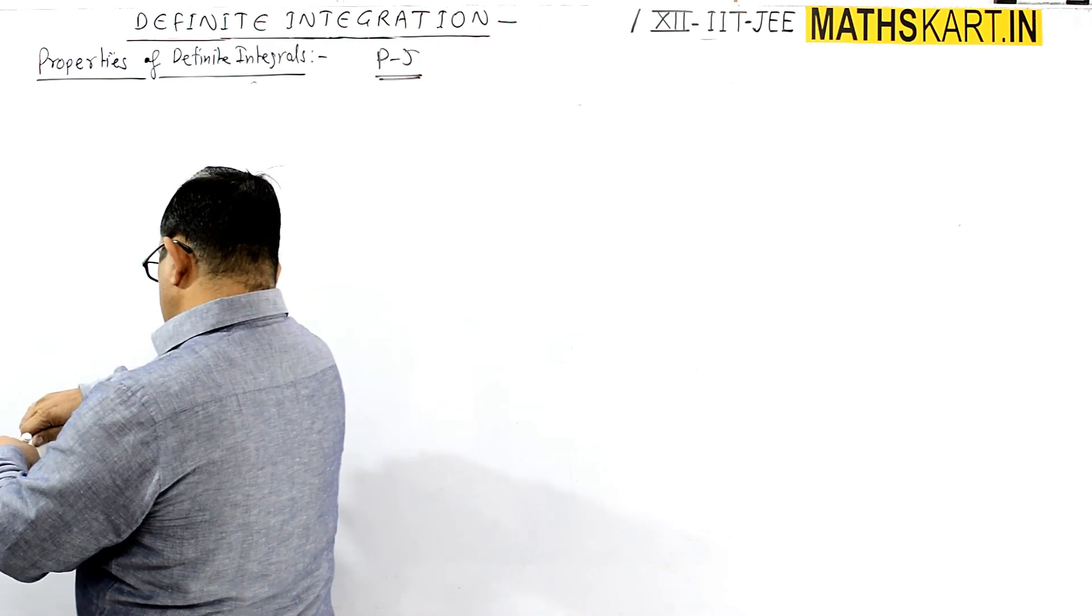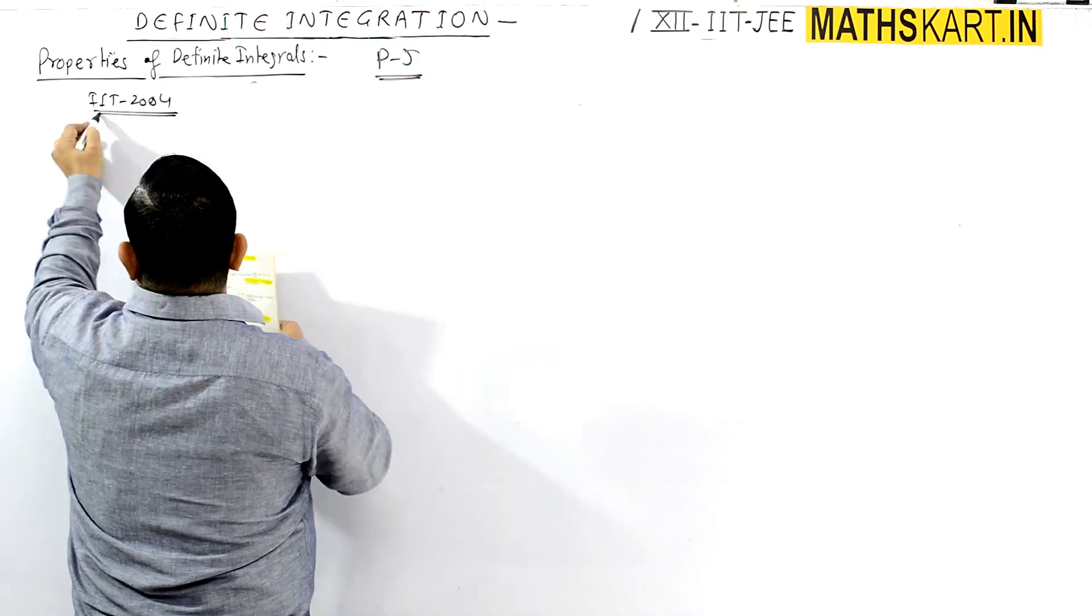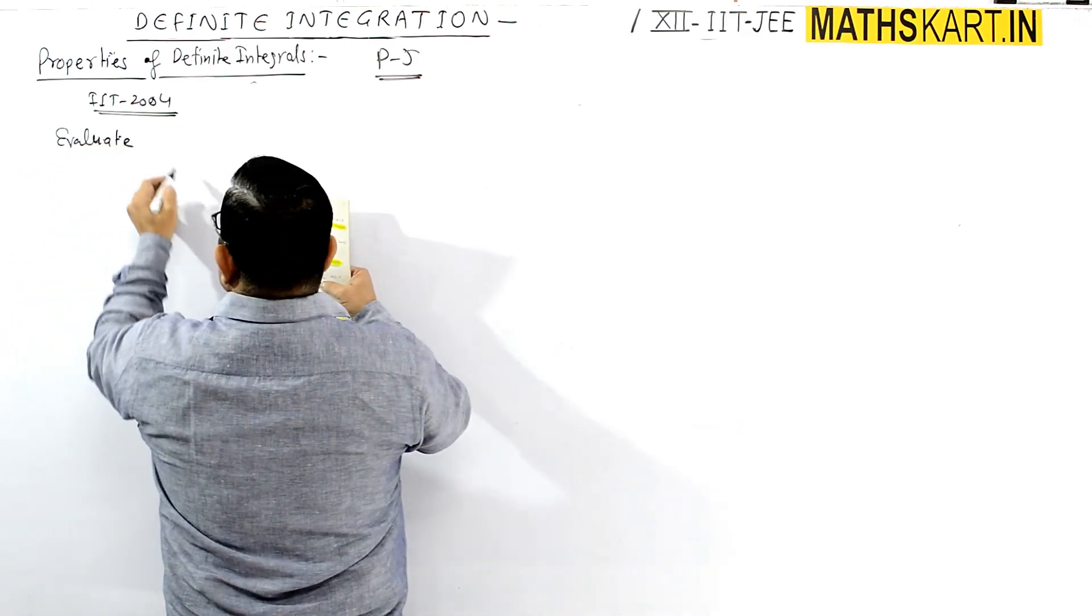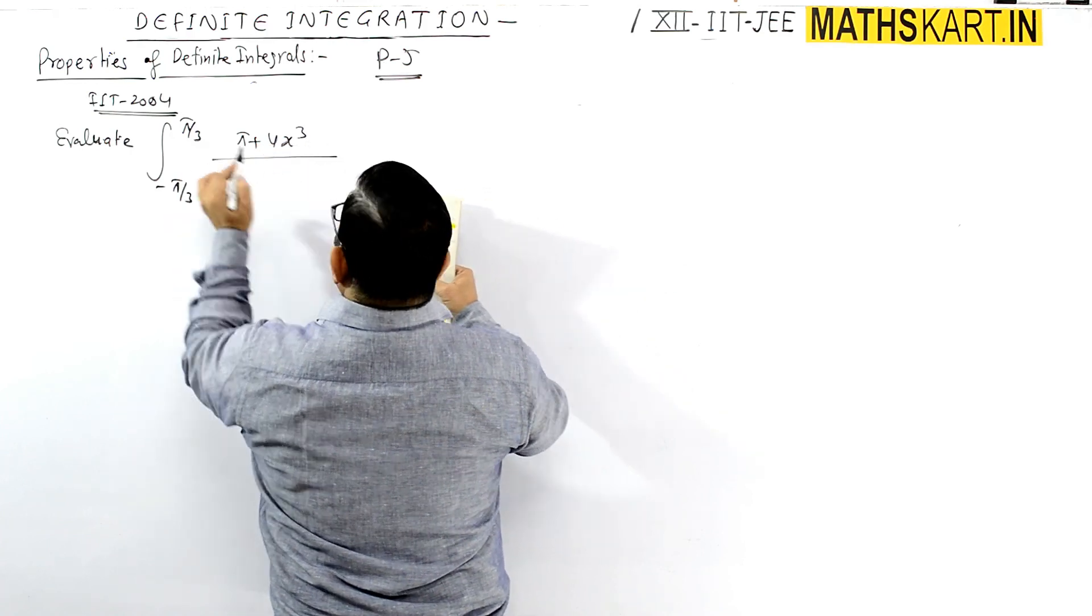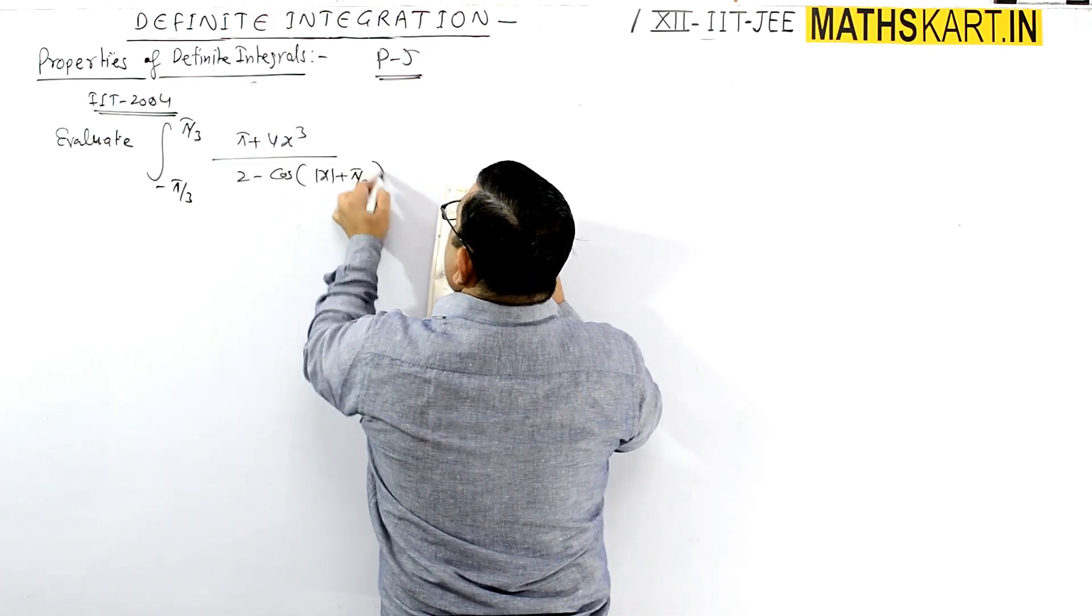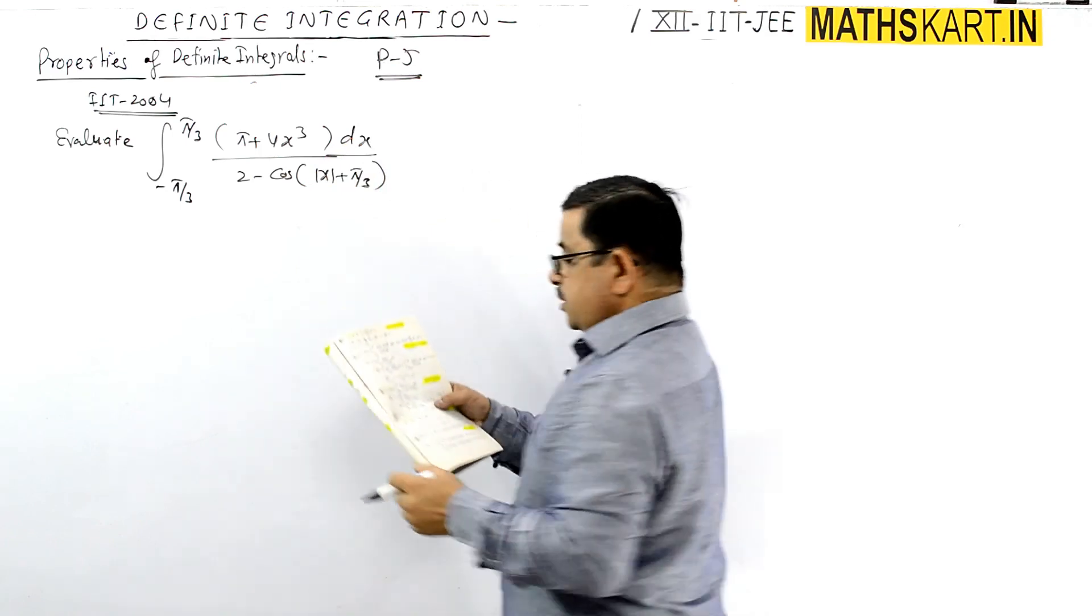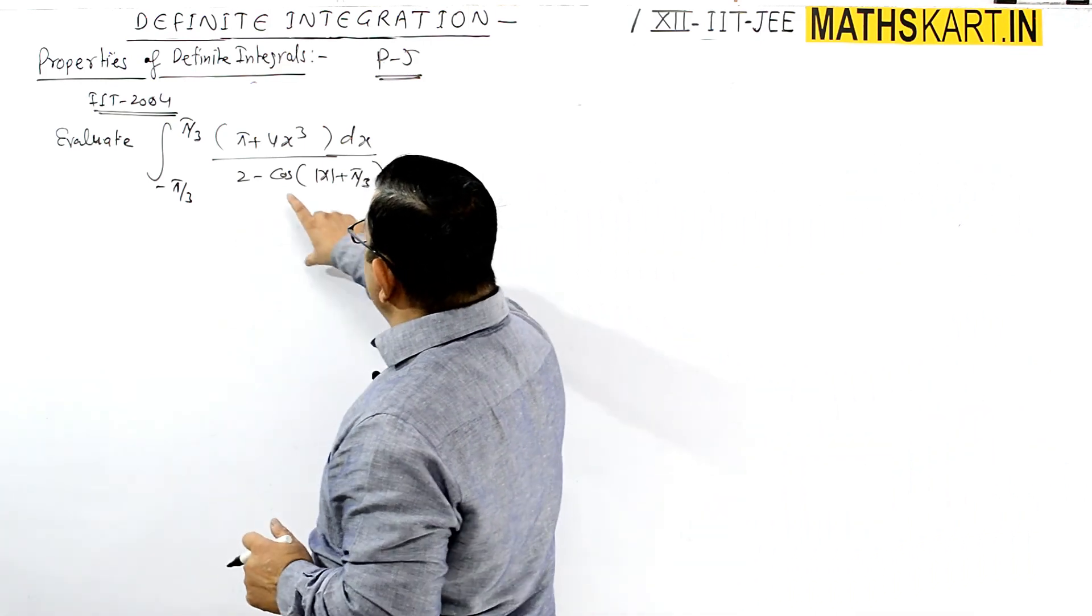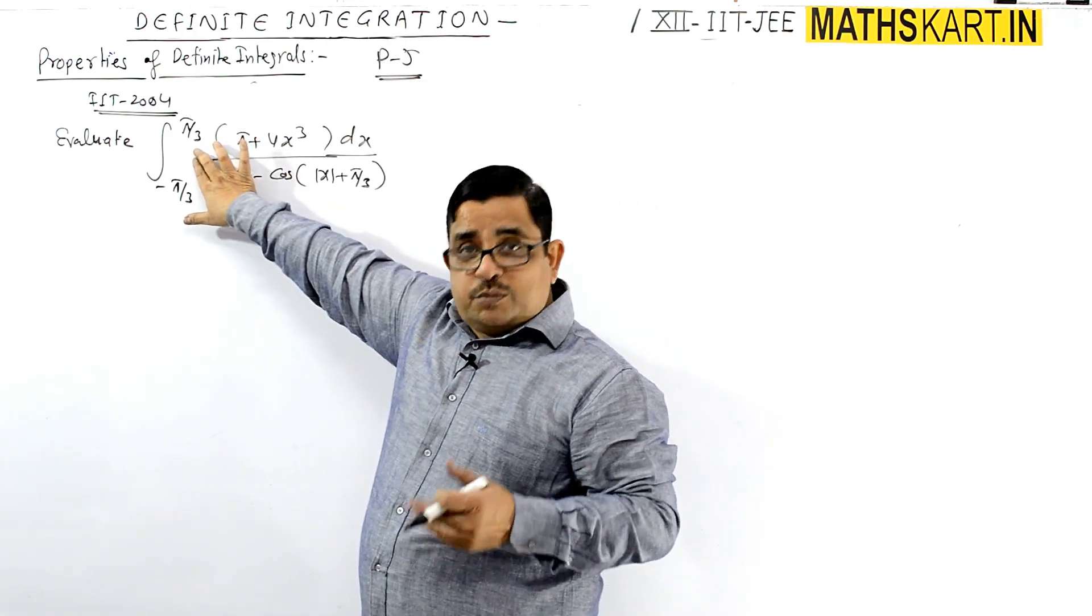Next question from IIT 2004: Evaluate the integral from -π/3 to π/3 of π plus 4x³ divided by 2 - cos(|x + π/3|) dx. Here we'll separate this particular portion. We can use property 5, but first we have to separate the even and odd parts.